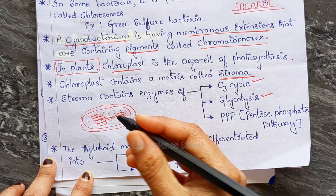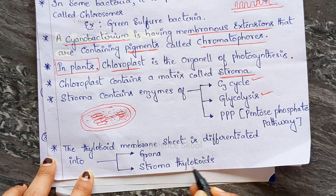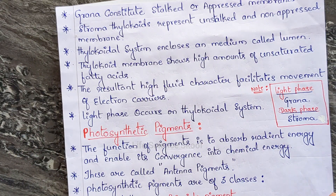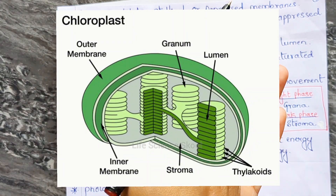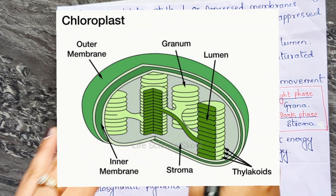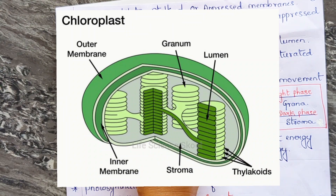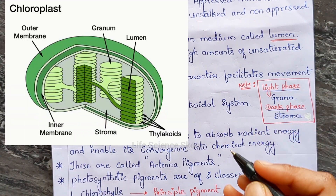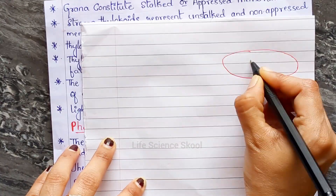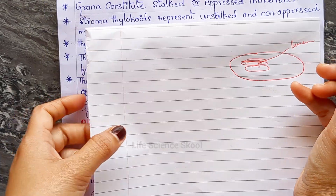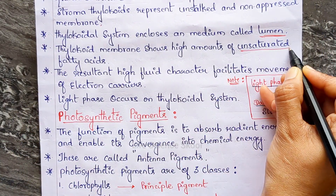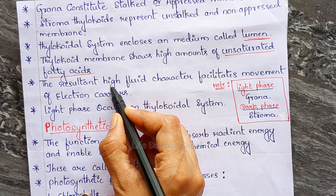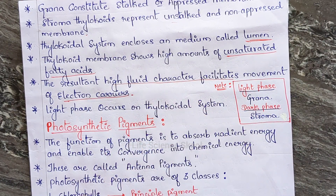Grana constitute stacked, appressed membranes — stacked one upon another. Stroma thylakoid represents the unstacked or non-appressed membranes. The thylakoid system encloses a medium called the lumen. The thylakoid membrane shows a high amount of unsaturated fatty acids, resulting in high fluid characteristics that facilitate the movement of electron carriers.